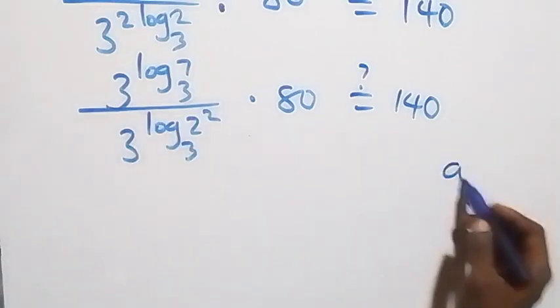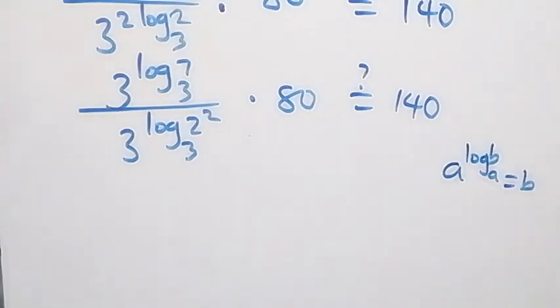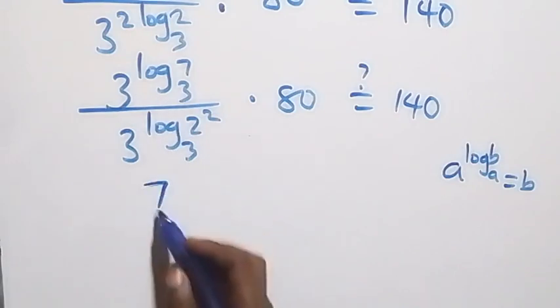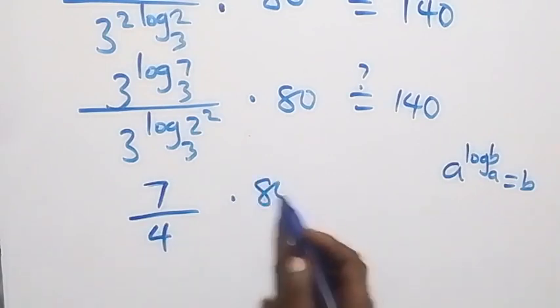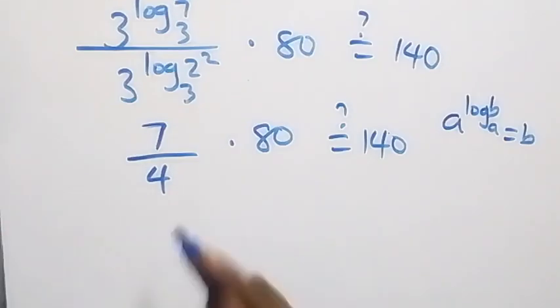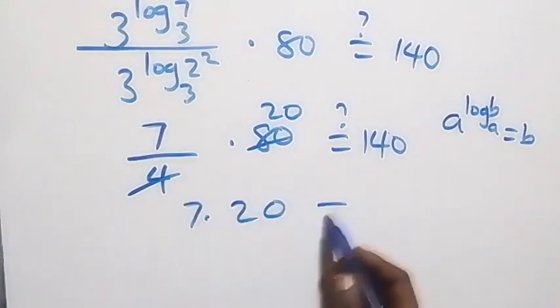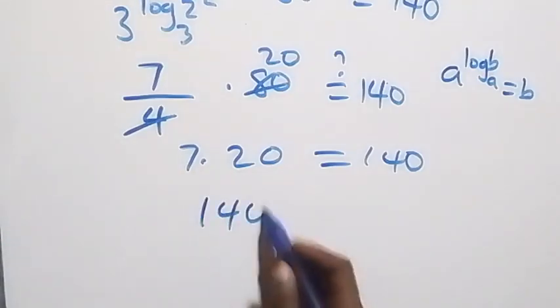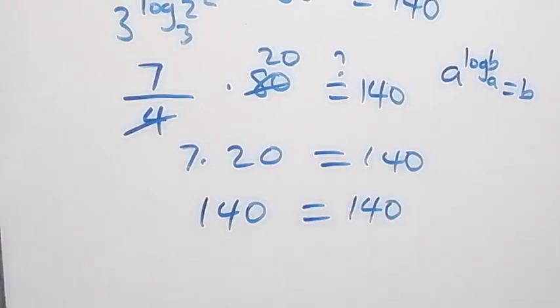Applying the rule a raised to power log b base a equals b: 3 raised to log 7 base 3 is 7, and 3 raised to power log 2 squared base 3 is 2 squared which is 4. So we have 7 over 4 times 80, which gives 7 times 20, equals 140. Seven times 20 is 140, which equals 140.